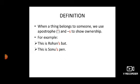What is possession? When a thing belongs to someone, we use apostrophe and S to show ownership. For example, this is Rohan's bat, wherein Rohan is having apostrophe S to show that this bat belongs to Rohan.